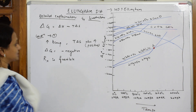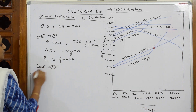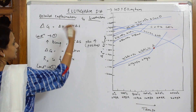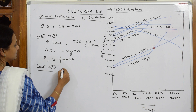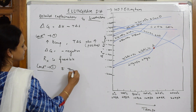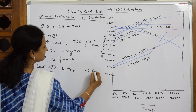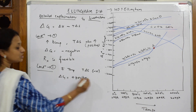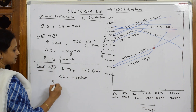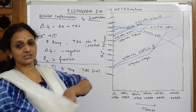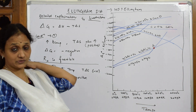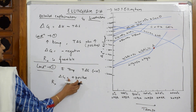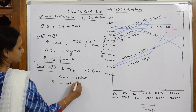Condition two: if the temperature decreases, TΔS decreases and becomes less, so ΔG becomes positive. When ΔG is positive, the reaction is not feasible. From grade 11 thermodynamics: the lower the energy of the system, the more feasible the reaction. So if ΔG is positive, the reaction is not feasible. These two conditions are important to remember.